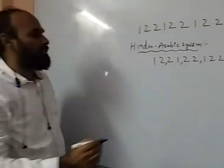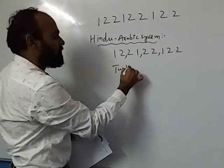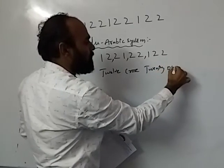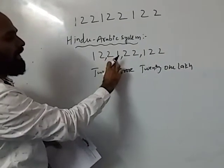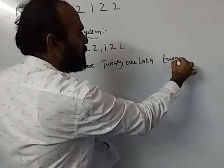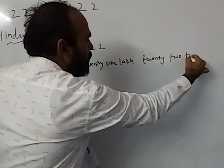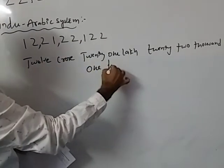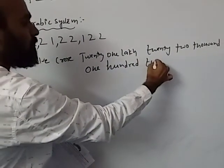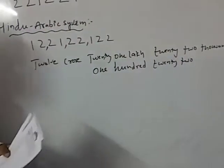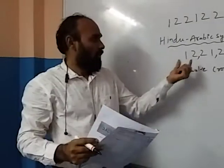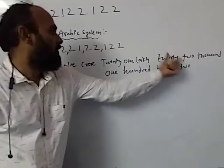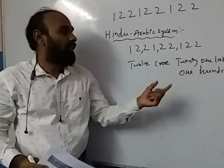The name of this number in the Hindu-Arabic System is: 12 crores, 21 lakhs, 22 thousand, one hundred and twenty-two. That is the name of the number in the Hindu-Arabic System.